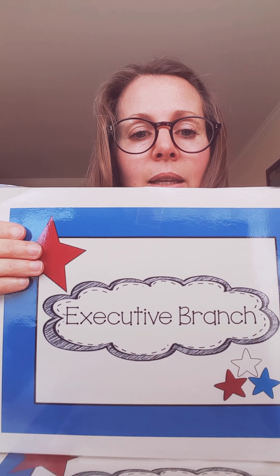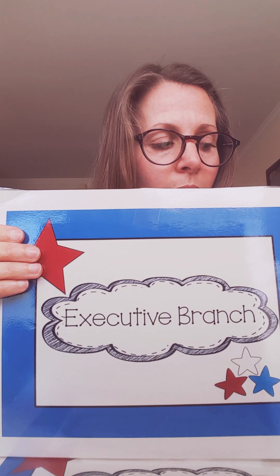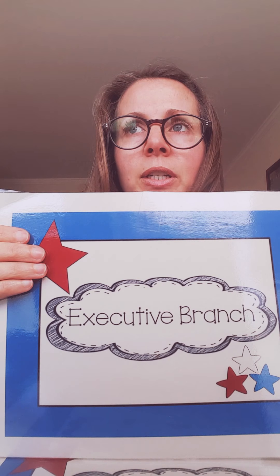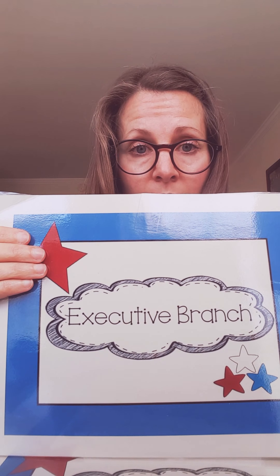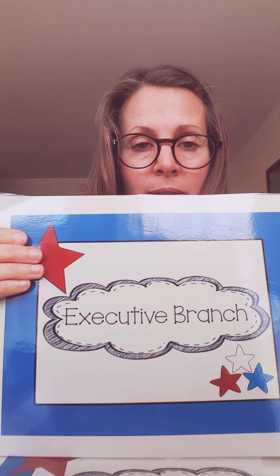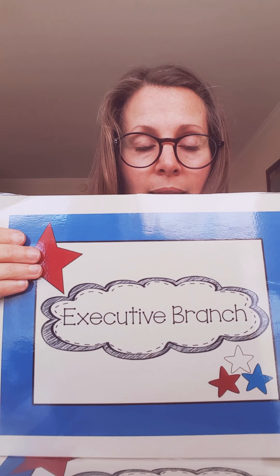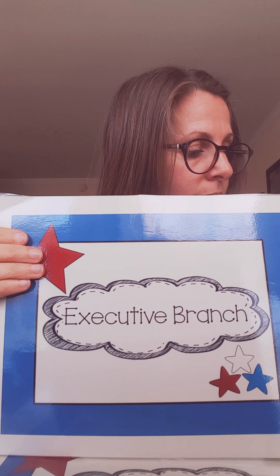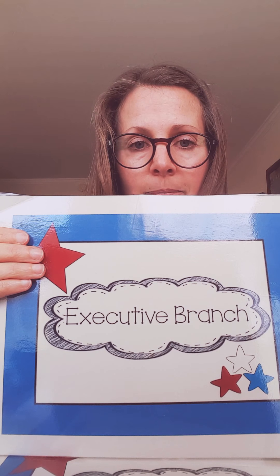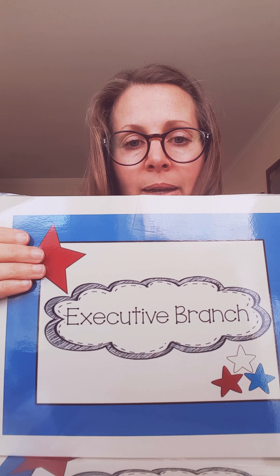The next branch in line is the executive branch. That's how you spell it. The executive branch — we can sum this up by saying the executive branch carries out the laws. It's the executive branch's job to carry out the laws. So you're going to write that down. And you can pause this any time for spelling and restart it back up.